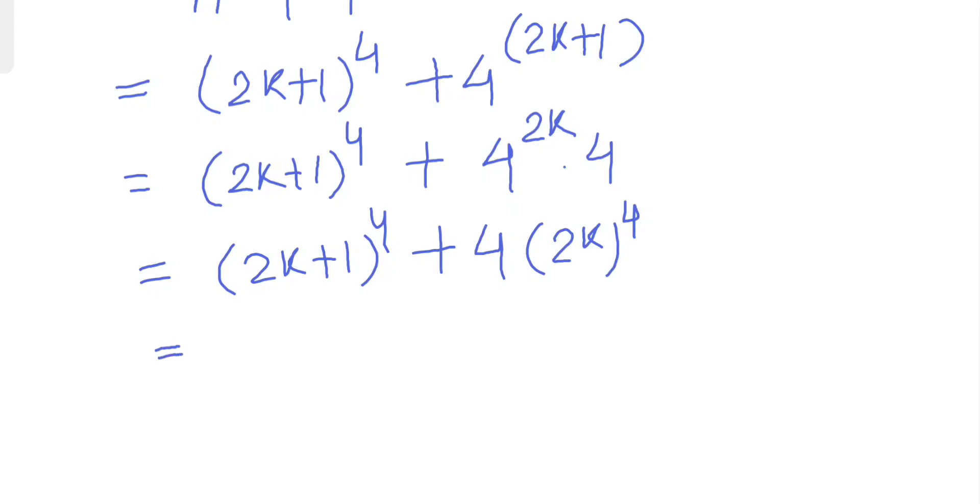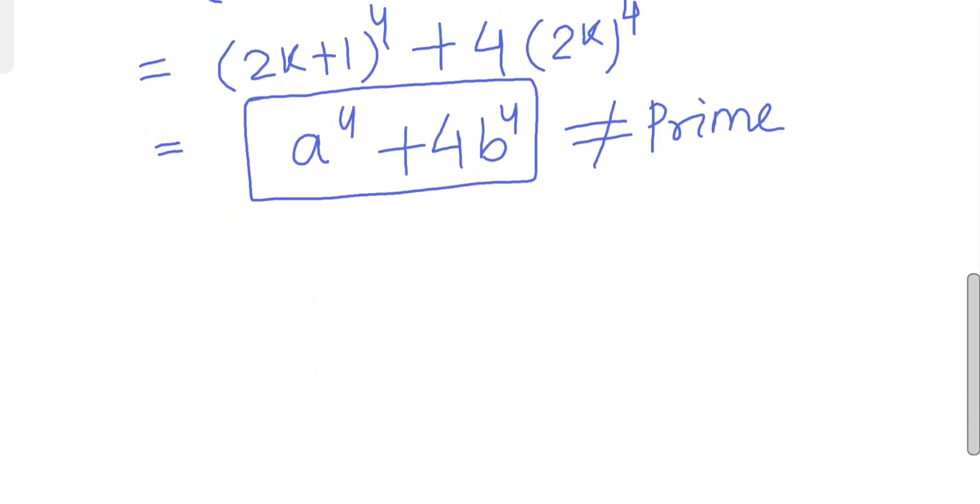This is something like the identity a to the power 4 plus 4b to the power 4. This is called Sophie Germain identity. This can be actually factorizable and can never be a prime number because we can factorize this.